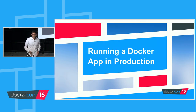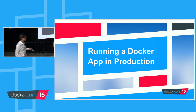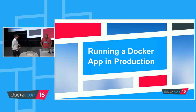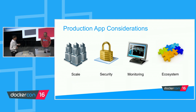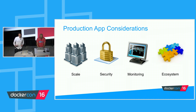Moving on — what are some considerations for actually running a Docker application in production? This list is by no means exhaustive, but we'll go through a few areas and talk about how the Docker CaaS solution helps solve these problems. Key areas to consider are: how do you build for scale across different data centers and public clouds; security, including access control and content trust; monitoring — how do you see when a problem is happening with your containers and understand statistics for a distributed application; and ecosystem — how do you integrate with all the different components across disparate infrastructure.